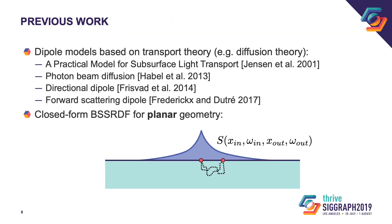There is a large amount of previous work on subsurface scattering. Most previous work is based on using transport theory, such as the diffusion approximation. Diffusion theory allows deriving closed-form expressions for the BSSRDF under the assumption of planar geometry. In practice, most objects we would like to render are of course not planar. Extending diffusion theory to general non-planar geometry is extremely difficult or even impossible. This has led to more and more renderers abandoning diffusion models in favor of brute force path tracing.